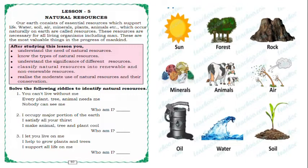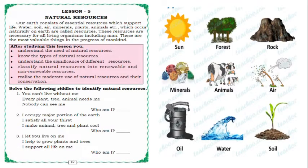For example, you can see in the picture: sun, animals, minerals, air, rock, forests, etc. After studying this lesson, children, we will understand the need of natural resources, types and significance, different resources including renewable and non-renewable resources, and realize the moderate use and conservation of natural resources.